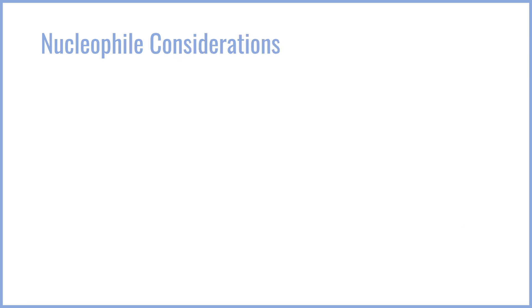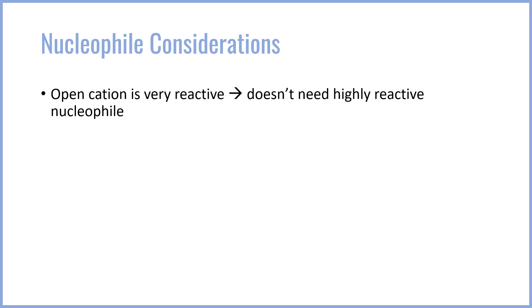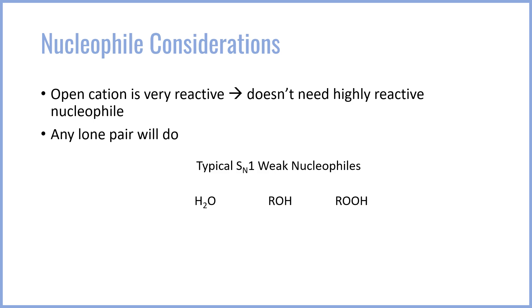The next major consideration for the SN1 reaction are its nucleophilic considerations. We know that SN2 requires very strong nucleophiles. However, the open cation intermediate is actually very reactive, so you don't need that super reactive nucleophile that you do in SN2. Pretty much any lone pair will work for an SN1 reaction, and the typical nucleophiles we see for SN1 are things like water, alcohols, or even carboxylic acids.